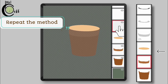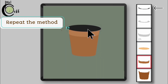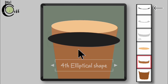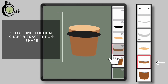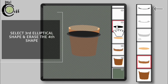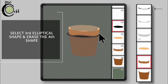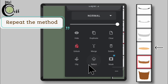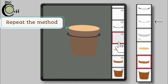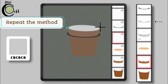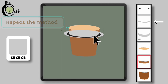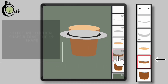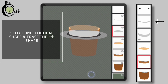Select the first elliptical layer, add a layer and fill color. Select the third elliptical shape, then go to the fourth elliptical shape and erase it. Select the first elliptical layer, add a layer and fill color. Select the third elliptical shape, go to the fifth elliptical shape and erase it.